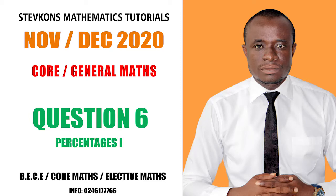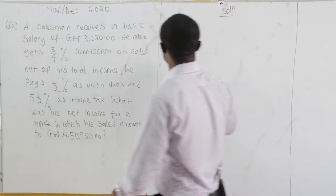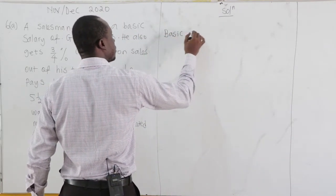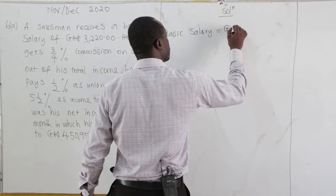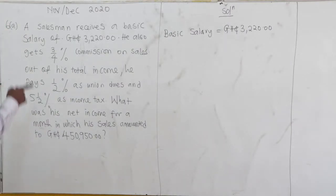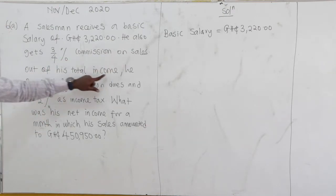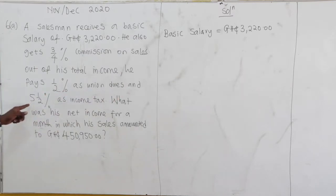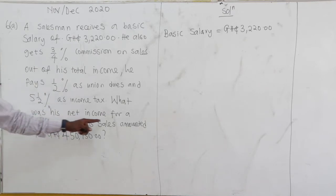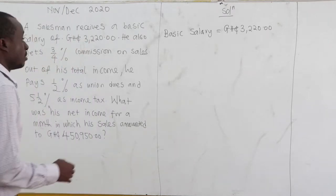Question 6A, November 2020. A salesman receives a basic salary of 3220 cedis. He also gets 3/4 percent commission on sales. Out of his total income, he pays 1/2 percent as union dues and 5½ percent as income tax. What was his net income for a month in which his sales amounted to 450,950 cedis? So his total sales are 450,950.